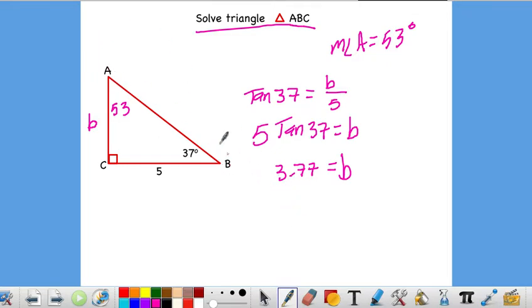And then, to find the measure of our hypotenuse AB, we could use the Pythagorean theorem, or we could use trig again. I'm going to go ahead and use trig. So, we could do, like, any of our trig ratios, basically. I'll maybe do cosine. So, cosine 37 equals 5 over little c. So, c is equal to 5 over cosine 37. We get something like 6.26 for our little c. And that's what it means to solve a triangle. It's just to find all three sides and all three angles.